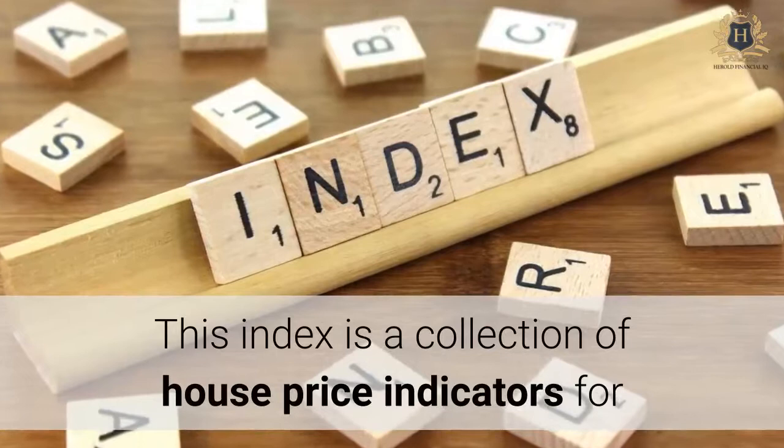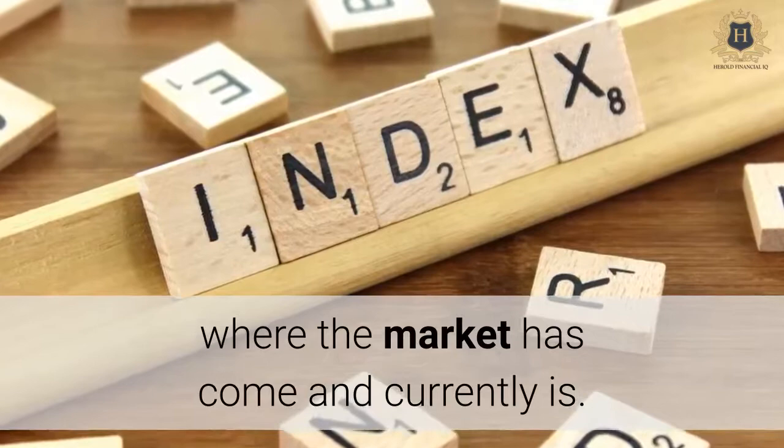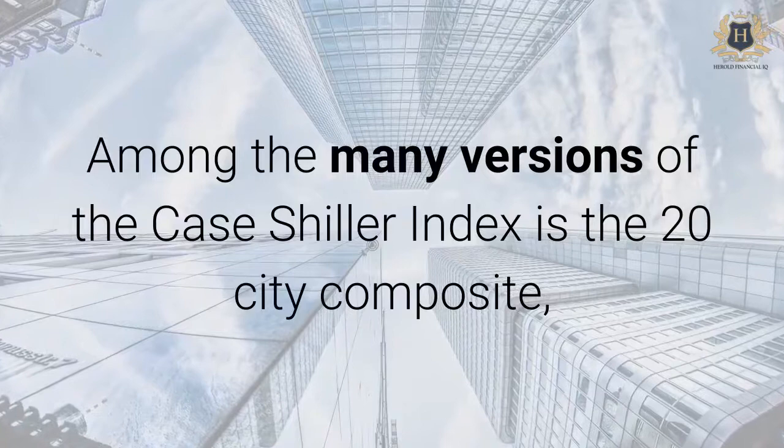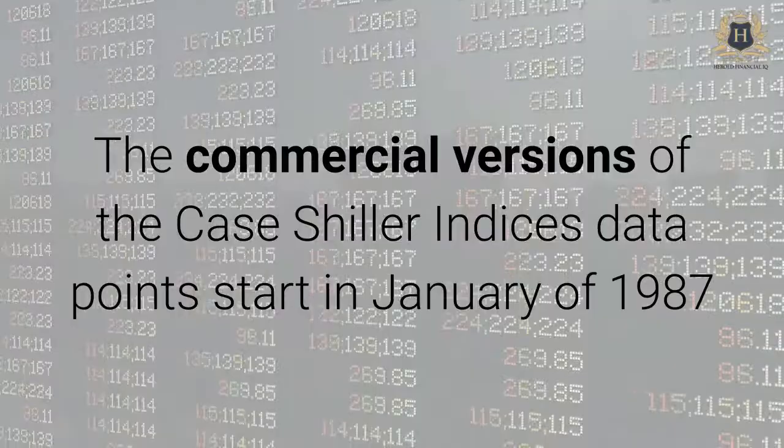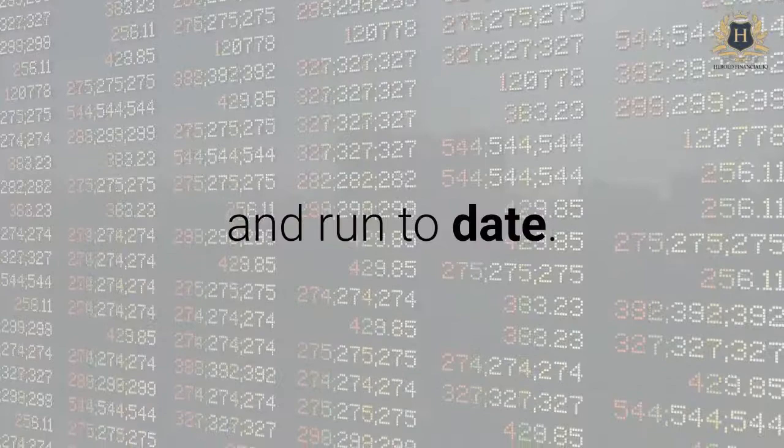This index is a collection of house price indicators for where the market has come and currently is. Among the many versions of the Case-Shiller Index is the 20-city composite, the 10-city composite, and also 20 metro individual regions. The commercial versions of the Case-Shiller Index data points start in January of 1987 and run to date.